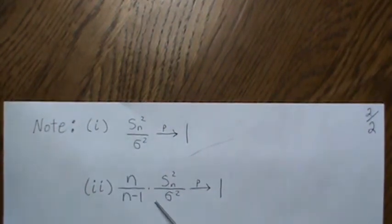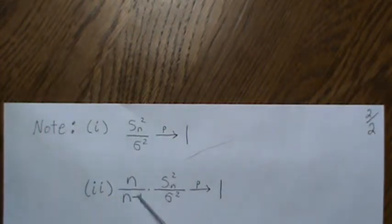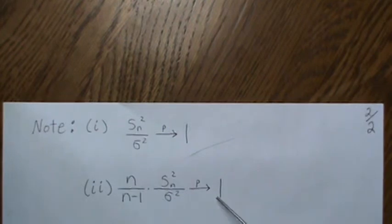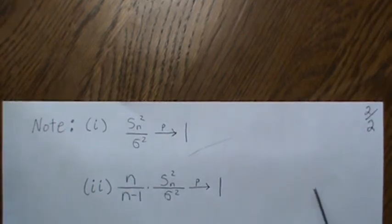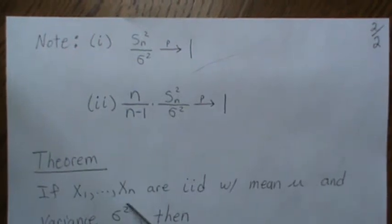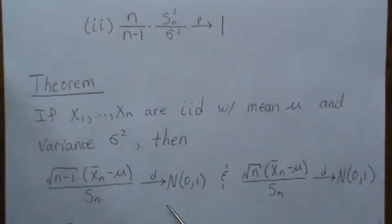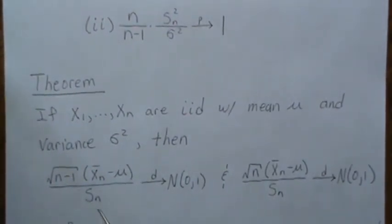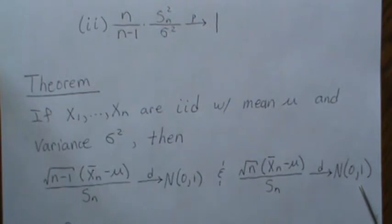This shows that the bias-adjusted sample variance converges in probability to the population variance σ². Now let's look at this theorem: if X1 through Xn are IID with mean μ and variance σ², then both the standardized statistic using the population standard deviation σ and the one using the sample standard deviation Sn converge in distribution to the standard normal.